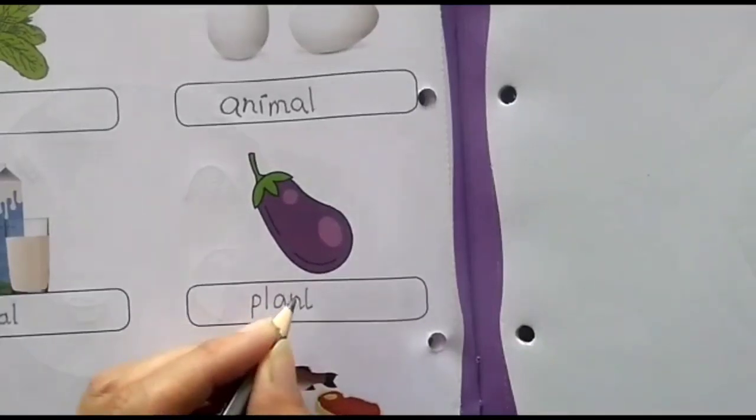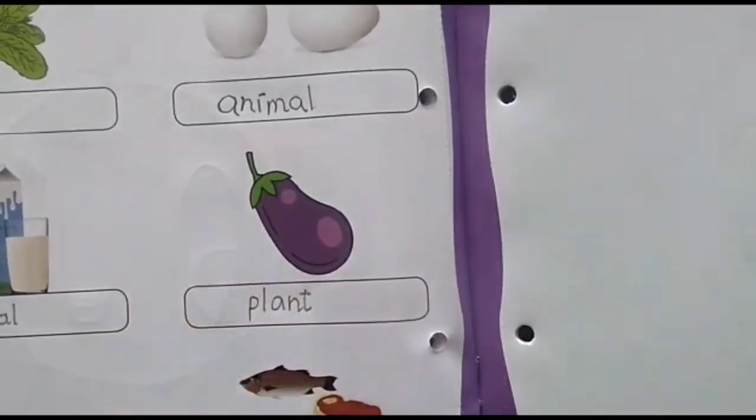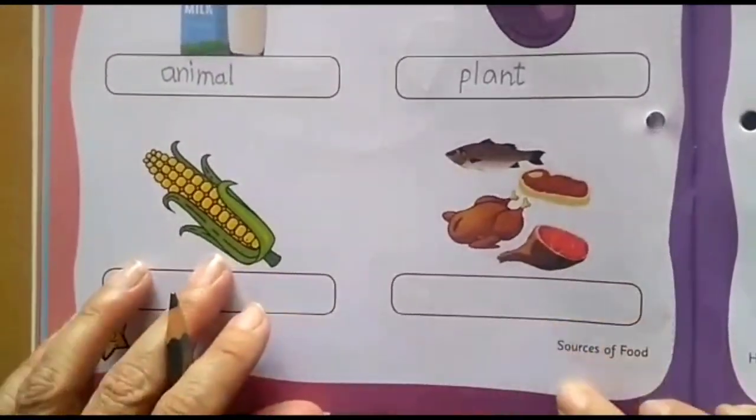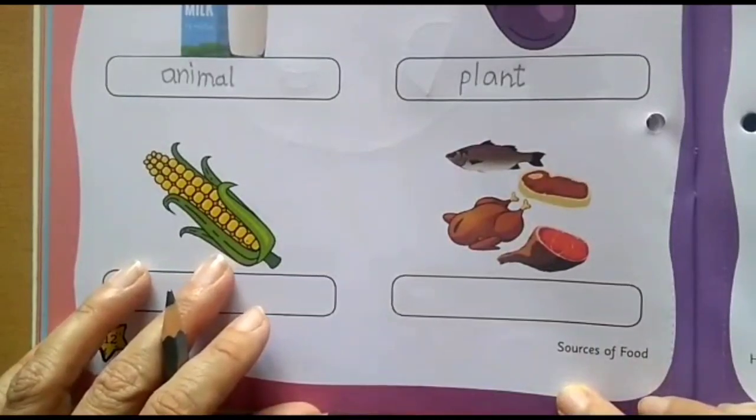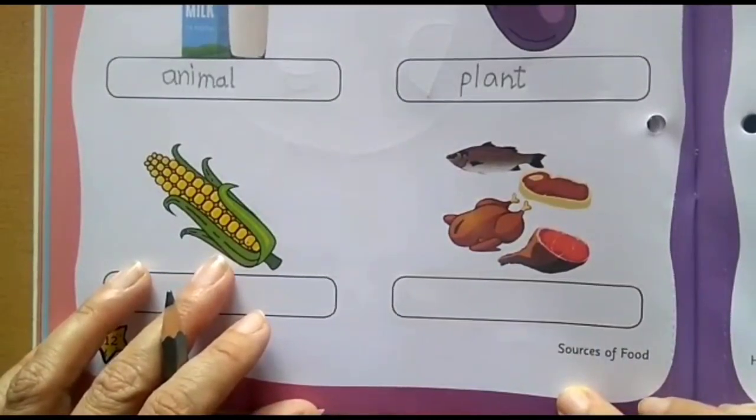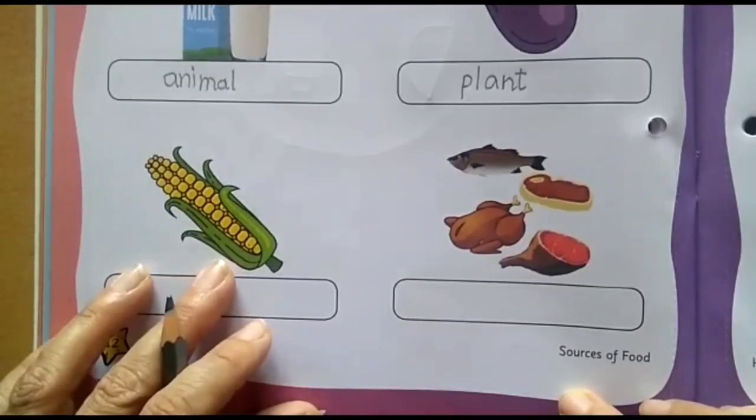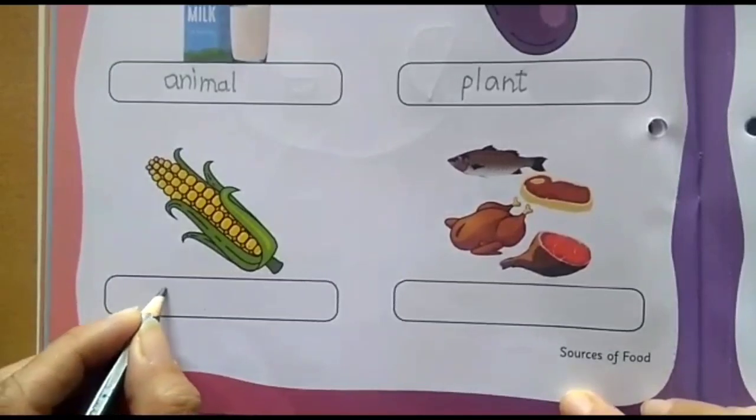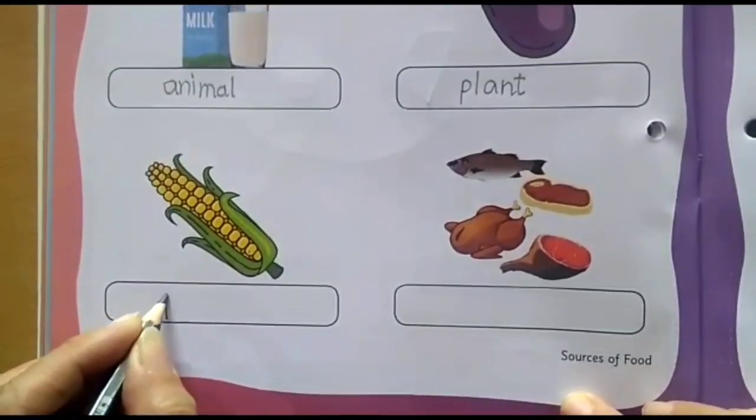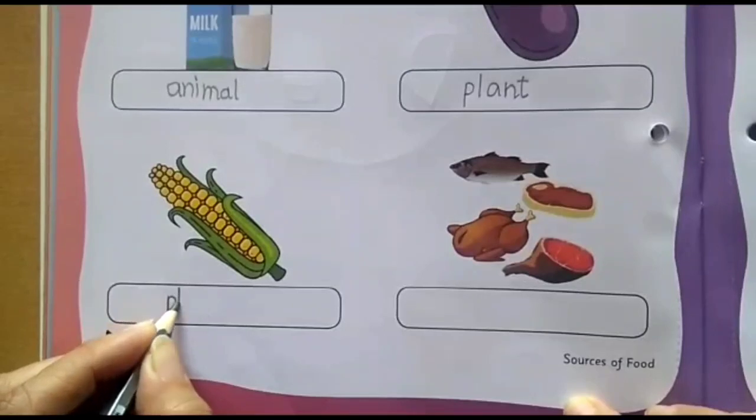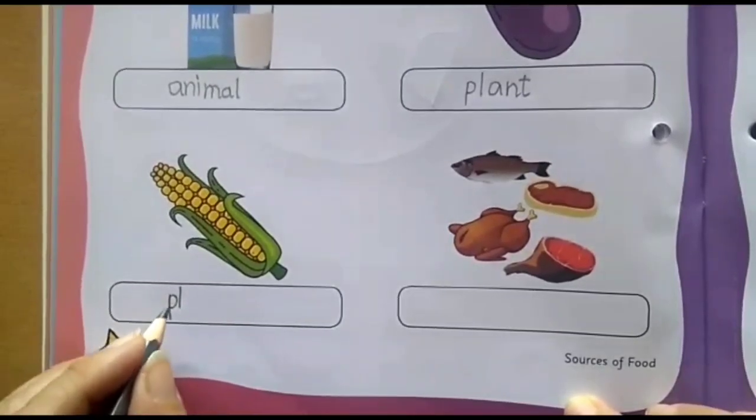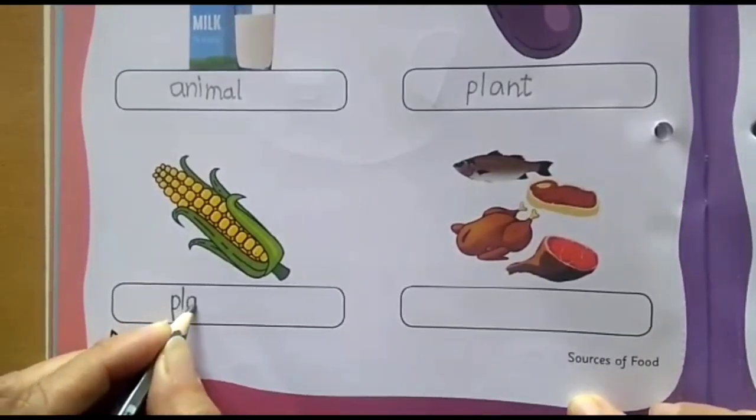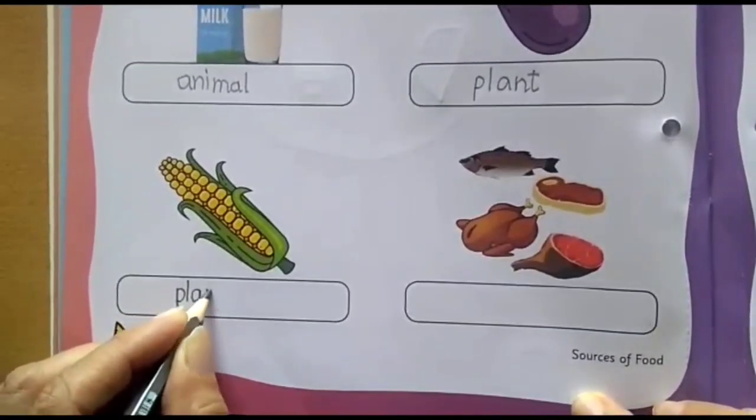Let us move on to the next one. What is this? We all like, no? Corn. So here, tell me. Corn we get from plant or animal. Corn from plant. Right? So here we are going to write plant. Do you like sweet corn? I like it a lot. So the spelling of plant is P-L. Then comes A, N, and T. Plant. Right?